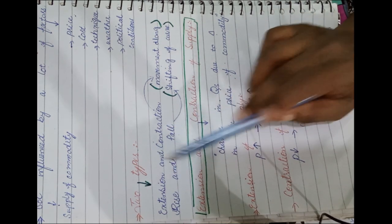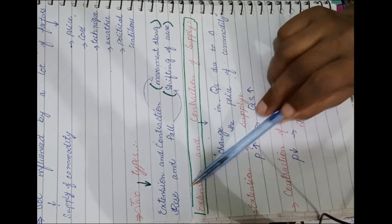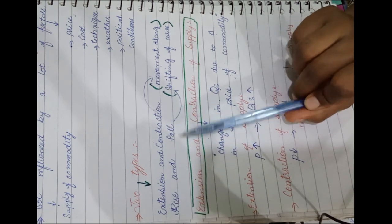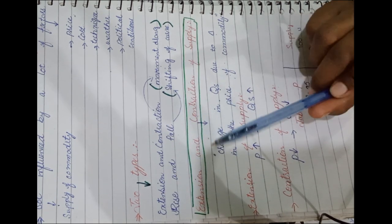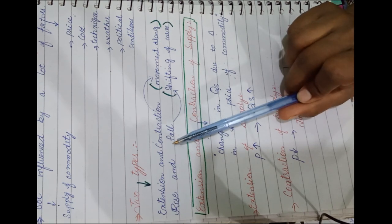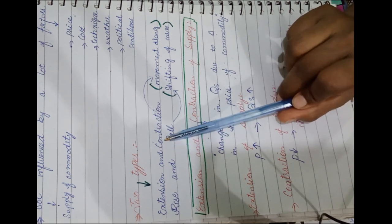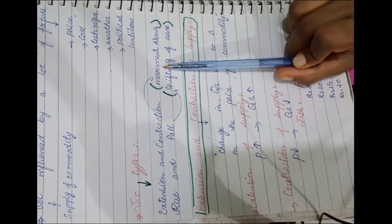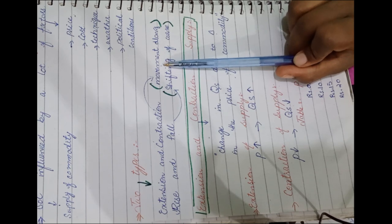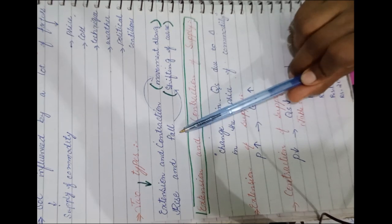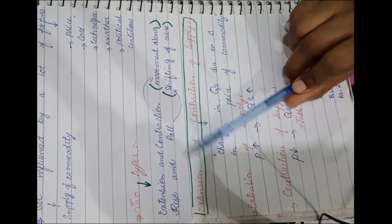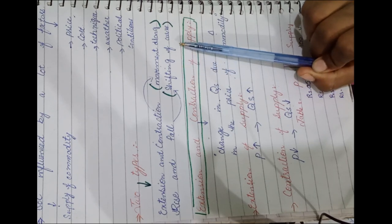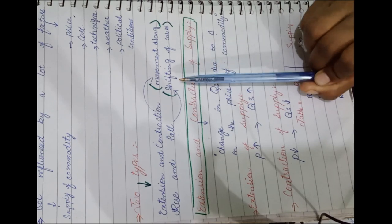There are two types of changes in supply. The first is extension and contraction, and the second is rise and fall. In the case of extension and contraction, there is a movement along the supply curve. In the case of rise and fall, there will be a shifting of the curve.